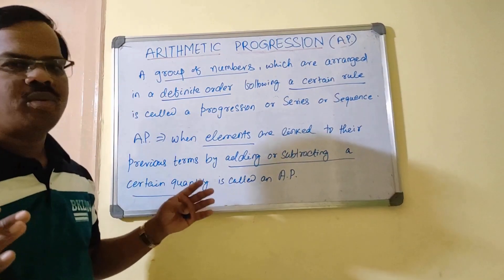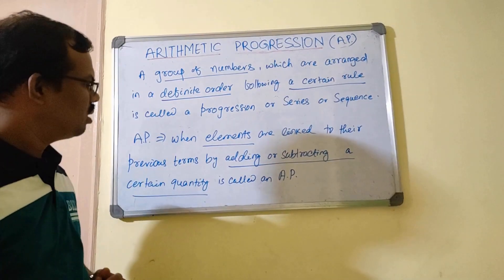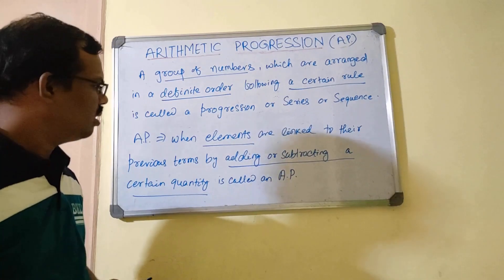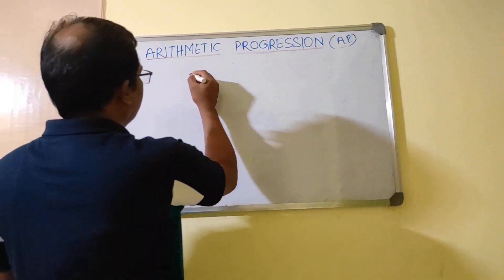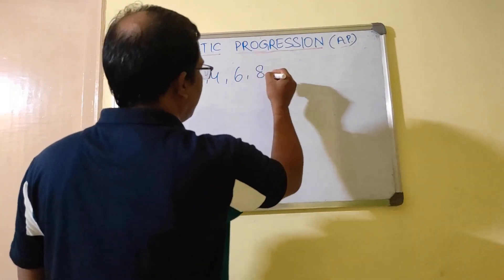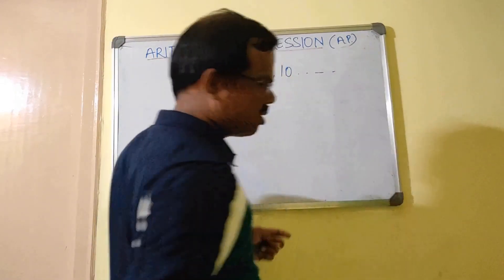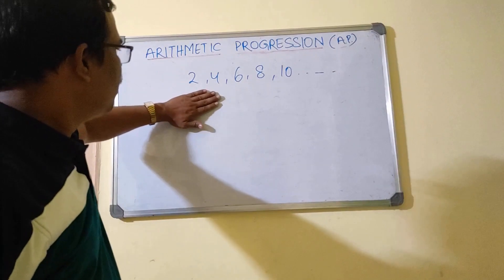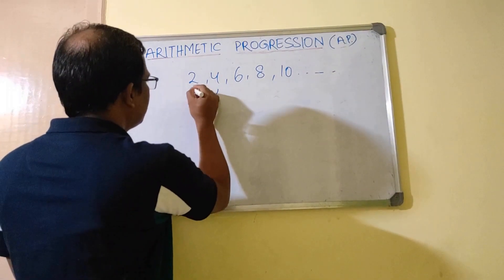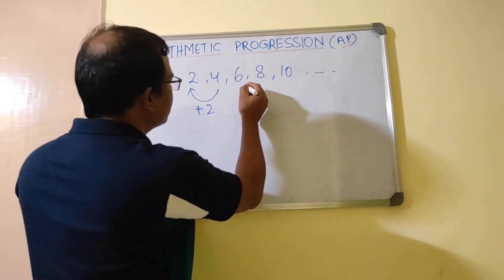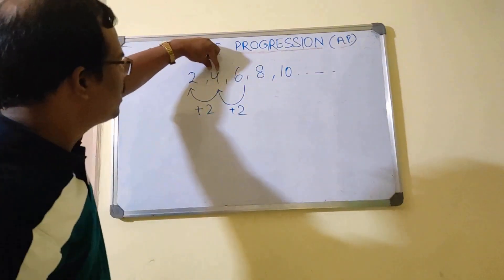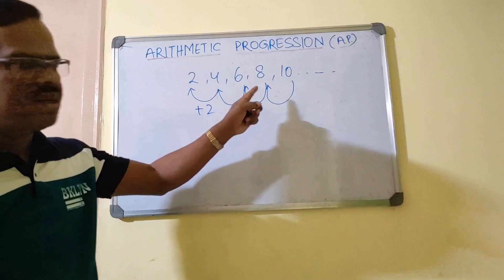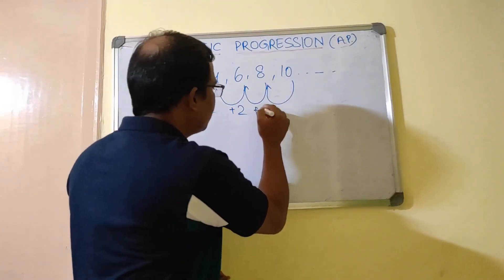This entire set is called an arithmetic progression. We saw the example one, two, three, four, five, but let me give more examples. Consider even numbers: six, eight, ten — this is an infinite series. Every time you add two to the preceding number you get the next number, everywhere. Every time if you add plus two, you will get the next term.